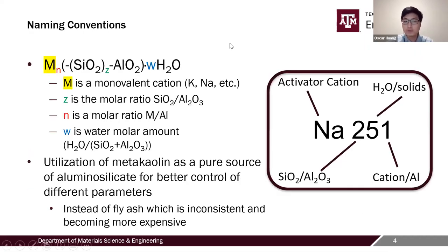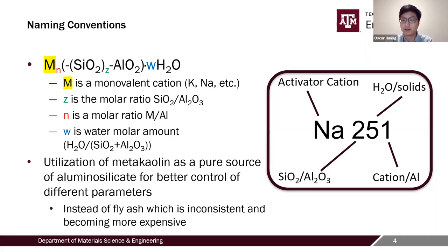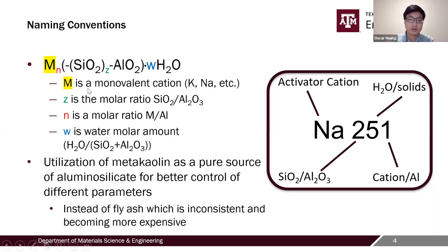The naming convention used throughout this presentation is based on four main chemical composition factors: the activating cation, the silicon-to-aluminum ratio, the water-to-solids ratio, and the cation-to-aluminum ratio. These can also be represented in the form of a chemical formula, as shown on the left.